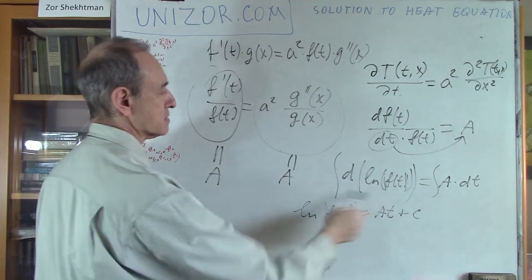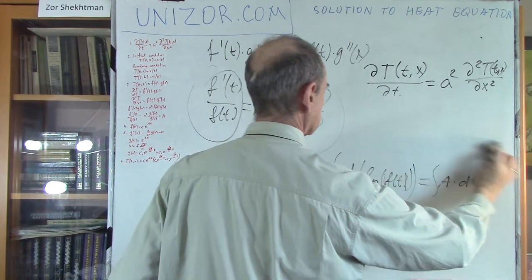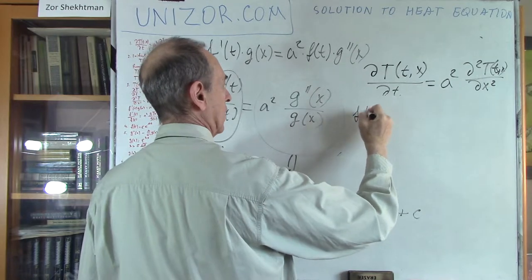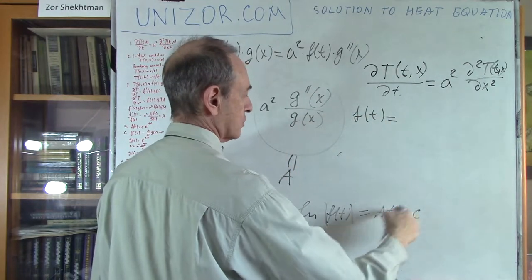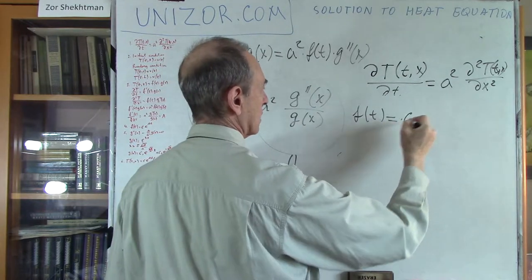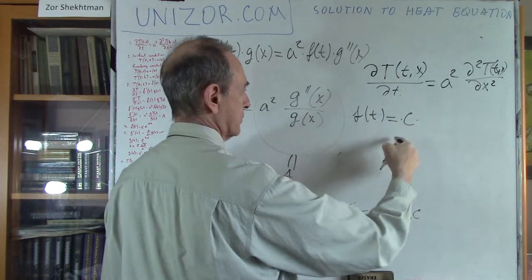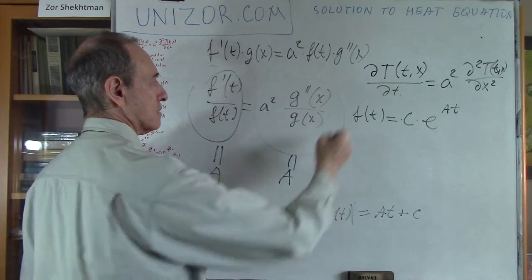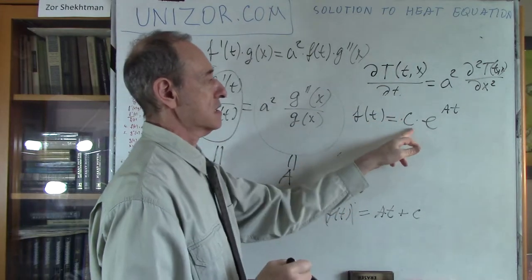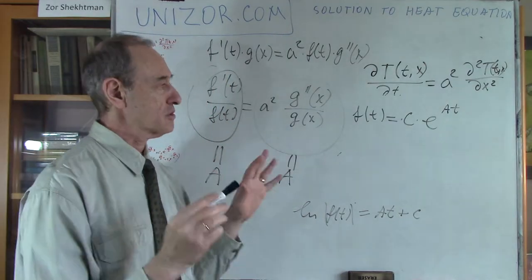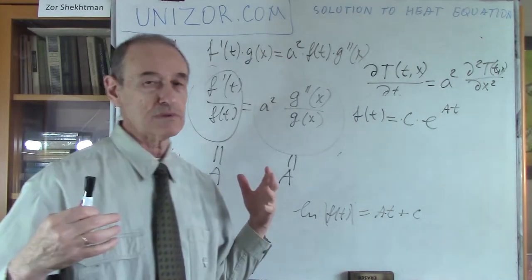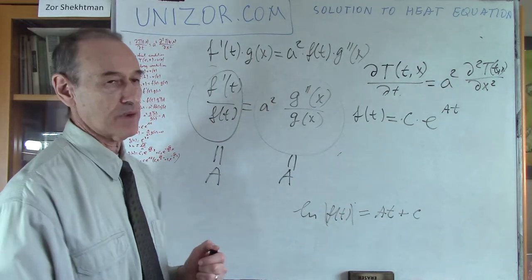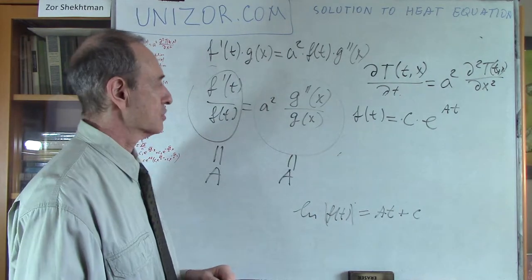I will raise e to these powers. If I raise e to the power of (a·t + c), I get f(t) equal to e^c times e^(a·t). Since c can be any constant, I put the constant in front as a multiplier C, so f(t) = C·e^(a·t). Whether I put an absolute value or not doesn't really matter since c is just any constant. This is just the general solution to the f(t) part of the equation. My purpose is just to demonstrate the avenue you can take, not every intricate detail.